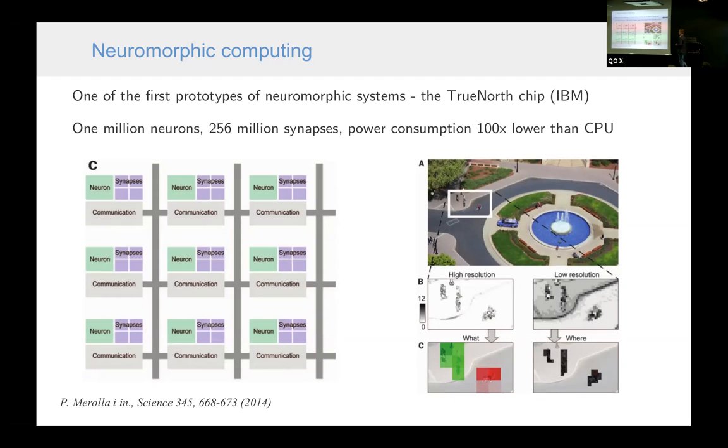Now, one of the first prototypes of neuromorphic systems was the TrueNorth chip developed by IBM, which contained about one million neurons. And it was built in such an architecture. You can see that here neurons and synapses. Neurons are like computational units, and synapses are memory of these neurons. These are weights of the neurons. And they are physically close to each other. And the communication is only necessary between units containing different neurons. And this architecture allowed to achieve power consumption, which is about 100 times lower than CPU in a machine learning task, which was recognizing objects in an image from a camera on the street.